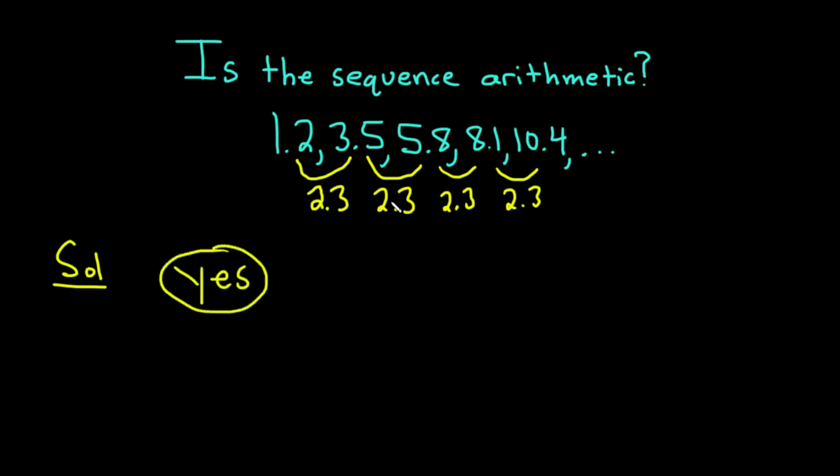And in this case, this number, this 2.3, has a special name. People usually denote it by the letter little d. In this case, little d is equal to 2.3. And the special name that we give it is the common difference. This is called common difference.